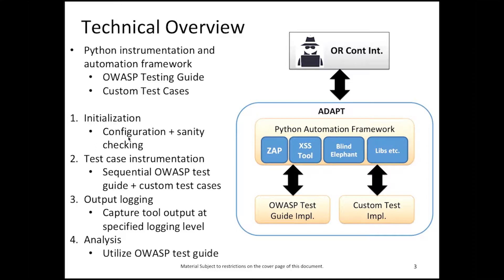As far as process flow, the tool can be started by a pen tester through their terminal or as part of a continuous integration effort. As it kicks off, it checks its configuration and performs sanity checking. In the second step, the tool instruments all test cases — first OWASP test cases, then custom implementations — capturing all output from all tools, libraries, and test cases. In the fourth step, the tool parses these log files to identify vulnerabilities, leveraging the OWASP testing guide's expected results versus what was actually found.